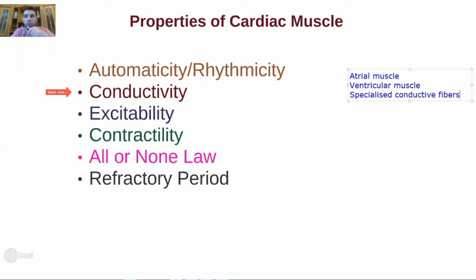So this is the third type of cell — specialized conductive fibers, the Purkinje fibers, the bundle branches, and all that. The next important property is excitability.